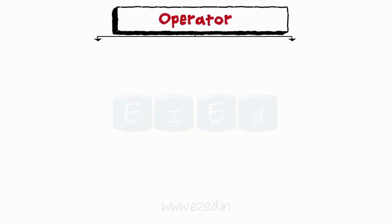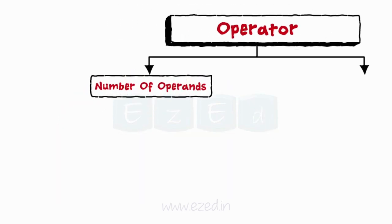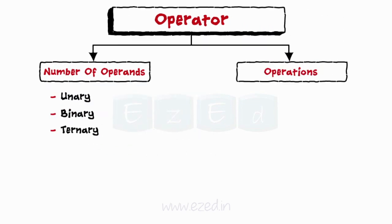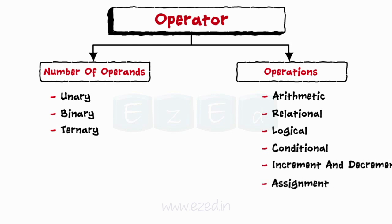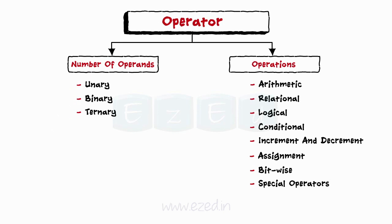The operators can be classified based on the number of operands as unary, binary and ternary. While based on the operations the operators perform they are classified as arithmetic, relational, logical, conditional, increment and decrement, assignment, bitwise, and special operators.